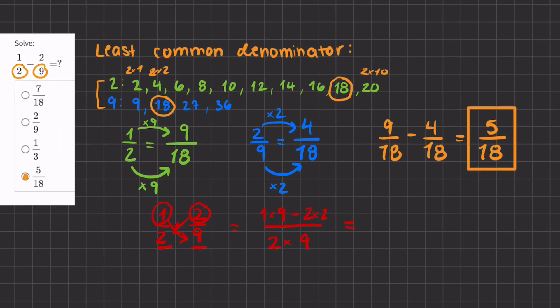So now, our fraction is a denominator of 18. And we'll have 1 times 9, which is 9, minus 2 times 2, which is 4. And now it's just simple subtraction.